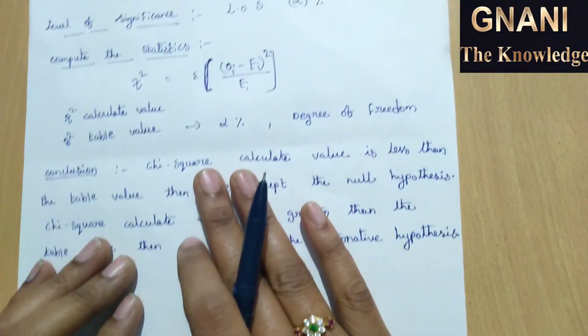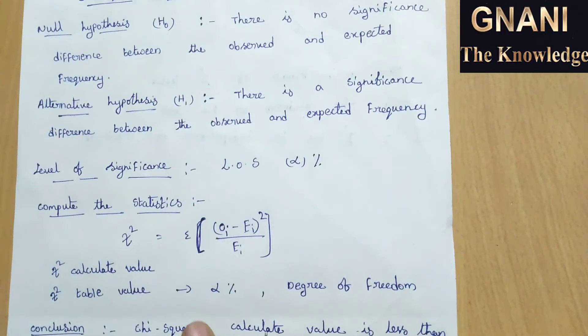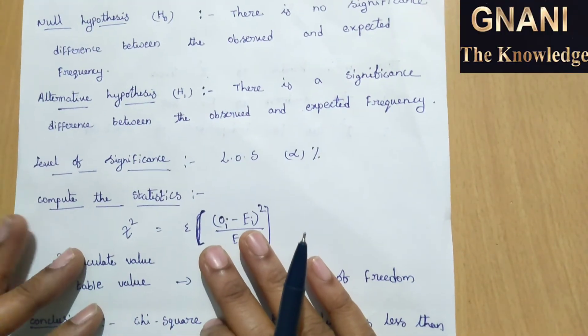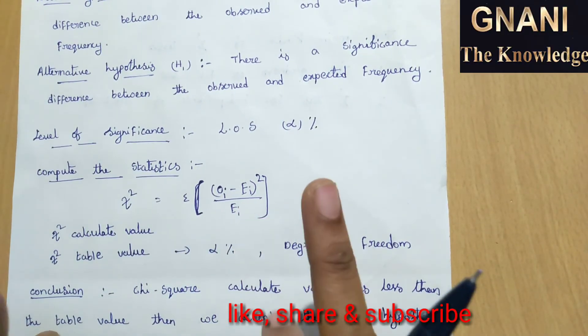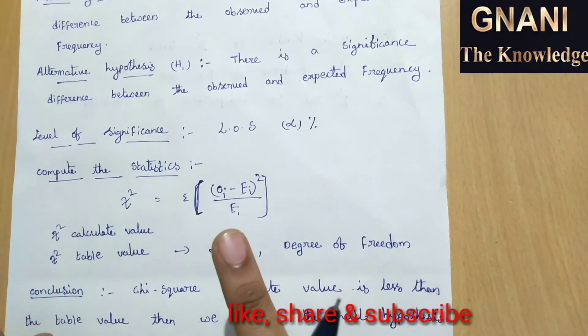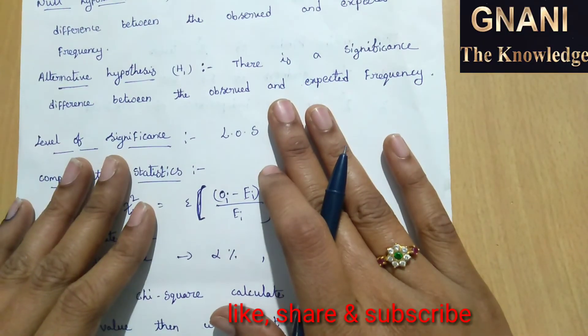This is the chi-square test of goodness of fit. This chi-square test is used to determine significant difference between the expected frequency and observed frequency. Thank you.